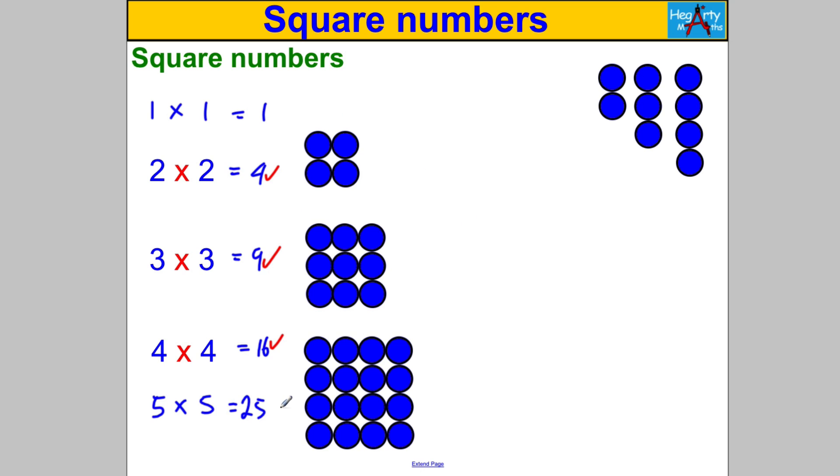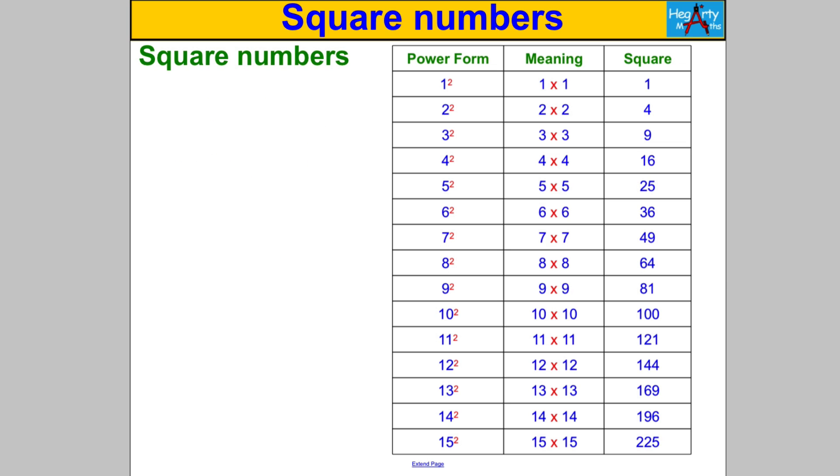So these are the first five square numbers. Let's go on to see all the squares we've got to learn. Now one thing I need to point out is something called power form or index form. 4 multiplied by 4, a mathematician can write that in a quick way as 4 squared. And 4 squared means 4 multiplied by 4. In our table I've got 1 squared which means 1 multiplied by 1 and the answer.